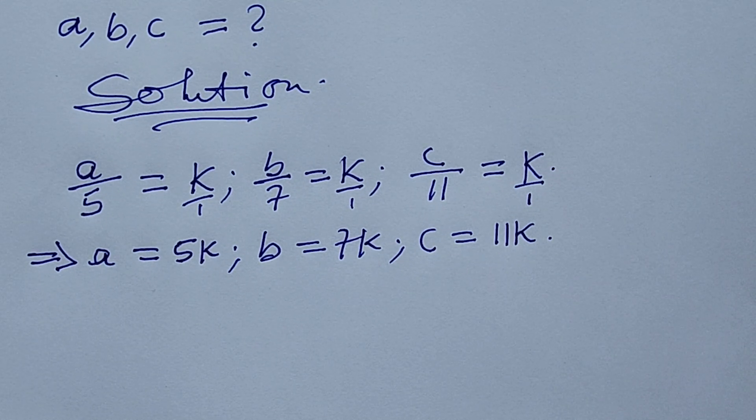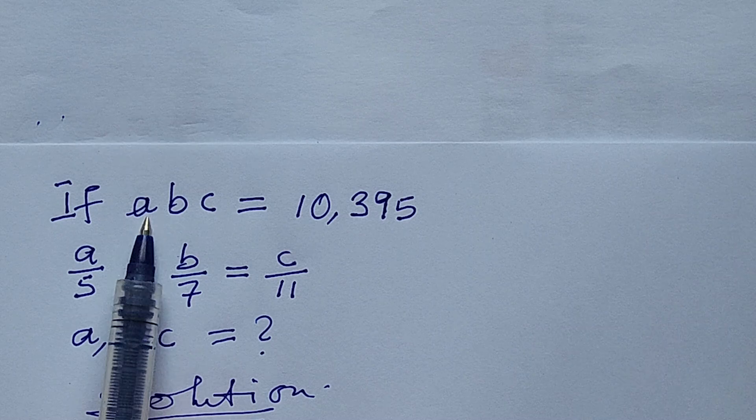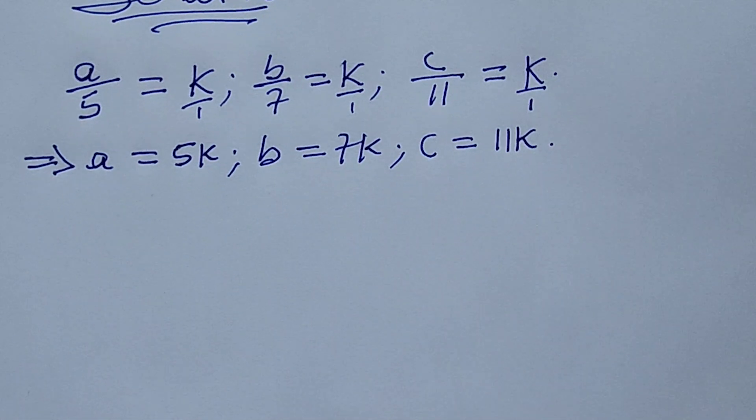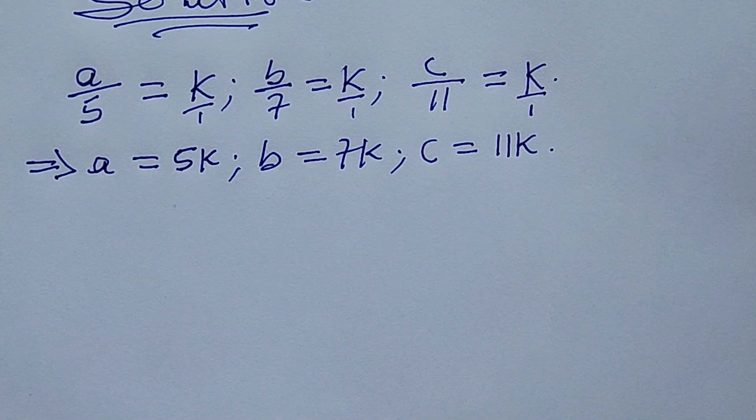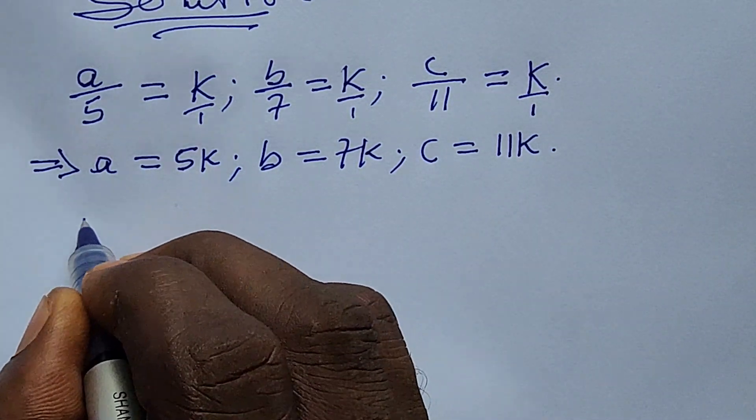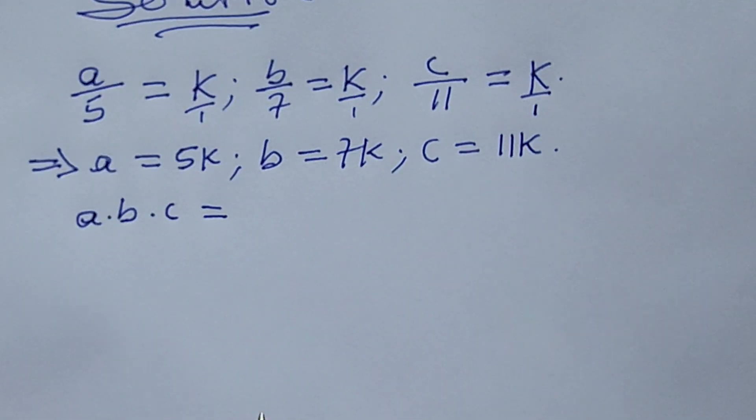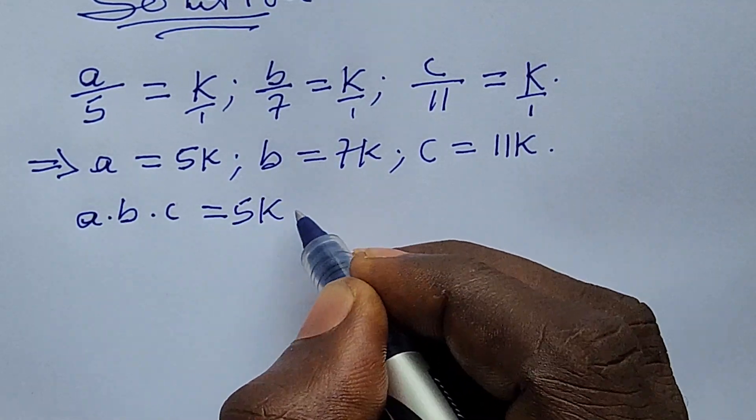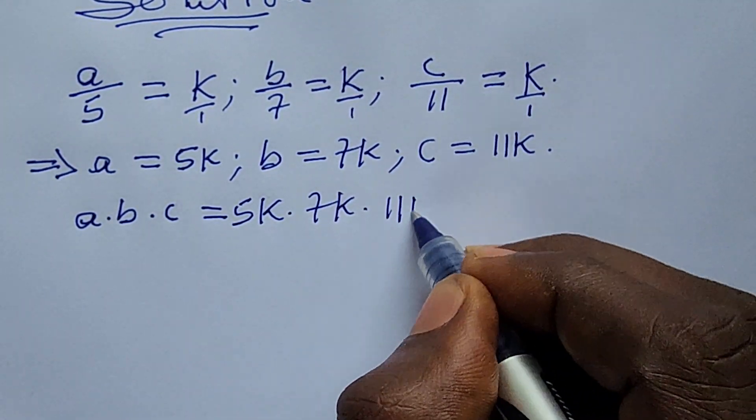So if we have all this, we should put this in mind that we are given that this a times b times c is equal to this. From here let's multiply the whole of these terms together. So if we multiply, we must say that your a times b times c will now be equal to 5k times 7k times 11k.